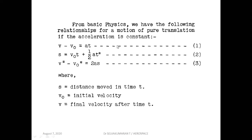Let us take the basic expressions from physics that we'll be using. You would have learned these in school: v minus u equals at — initial velocity, final velocity, time, and distance moved. We'll use these expressions to solve problems: given initial velocity, final velocity, and time taken, find the acceleration or distance traveled.